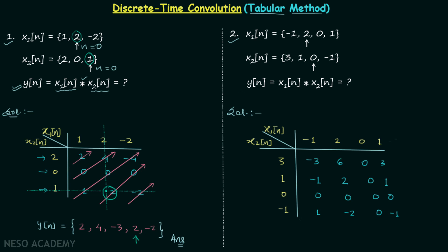Now we write down the samples of signal yn by adding diagonally. We get: minus 3, then minus 1 plus 6 equals 5, then 0 plus 2 plus 0 equals 2, then 1 plus 0 plus 0 plus 3 equals 4, then minus 2 plus 0 plus 1 equals minus 1, then 0 plus 0 equals 0, and finally minus 1.